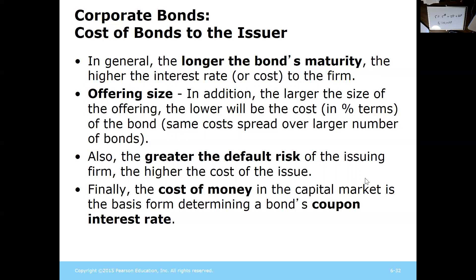After initially matching the coupon rate to the market rate, bonds can be traded on the market subsequently bought and sold. That's when you end up with changes in bond price based on how their interest rate compares to the prevailing rates on the market.